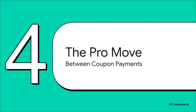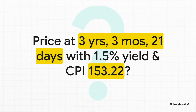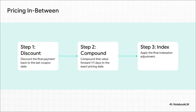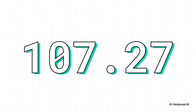Things get really interesting when you want to buy or sell on some random day of the month, not on a clean coupon payment date. Let's get really precise: what's the price on a day that's 3 years, 3 months, and 21 days into the bond's life, with a changed yield and CPI? The process has a few logical steps. First, we travel back in time and discount the final payment back to the last coupon date to find its value then. Then we travel forward, compounding that value for the 111 days between then and today. Finally, we apply our familiar inflation adjustment. After following that precise process, we get 107.27 — the exact index-adjusted price on that specific day, accounting for every single factor.